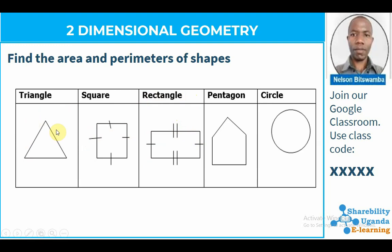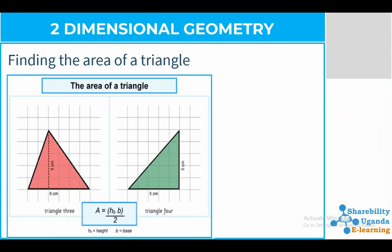In today's video we shall be handling triangles. If they tell you to find the area of a triangle, how do you come up with the correct answer? Or when they tell you to find the perimeter of a triangle, how do you go about it? The area refers to the space within the triangle, and the perimeter is the total distance or measure around the shape.